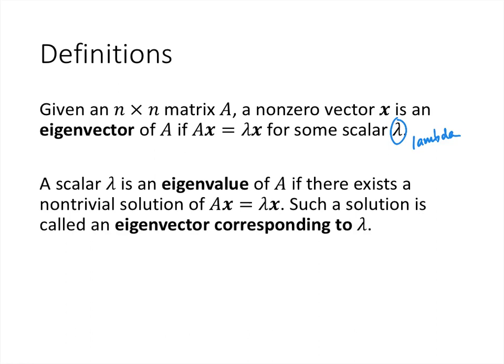In general, some scalars will be eigenvalues of some matrices and some won't. Some matrices will have many different eigenvalues, some matrices won't. We're just interested in when this happens and when it doesn't happen.